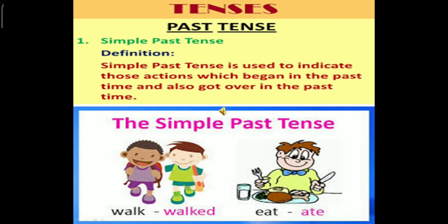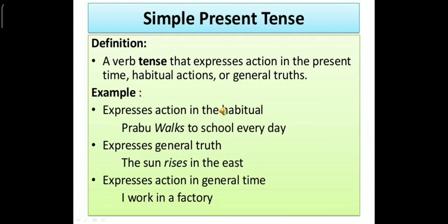Now let us talk about tenses. There are three tenses: past tense, present tense, and future tense. Past tense is used to indicate those actions which began in the past and also got over in the past. For example, 'walk' becomes 'walked' in the past tense. There are regular words where you add 'ed,' and irregular words that undergo a complete transformation, like 'eat.'